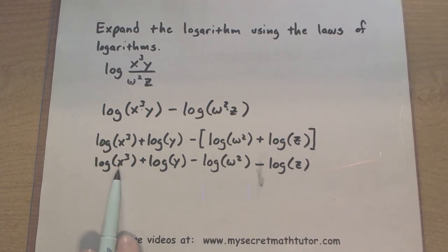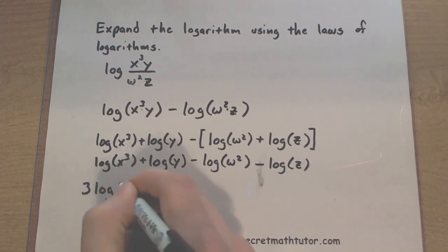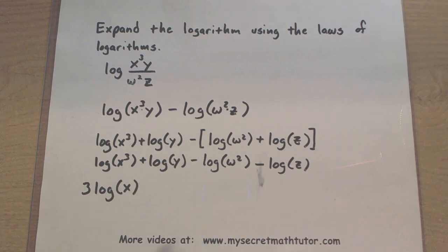So notice how we have an x cubed and a w squared. When there is an exponent on the inside of that log we can pull it out as a constant. So instead of log x cubed it changes it into three times log of x.